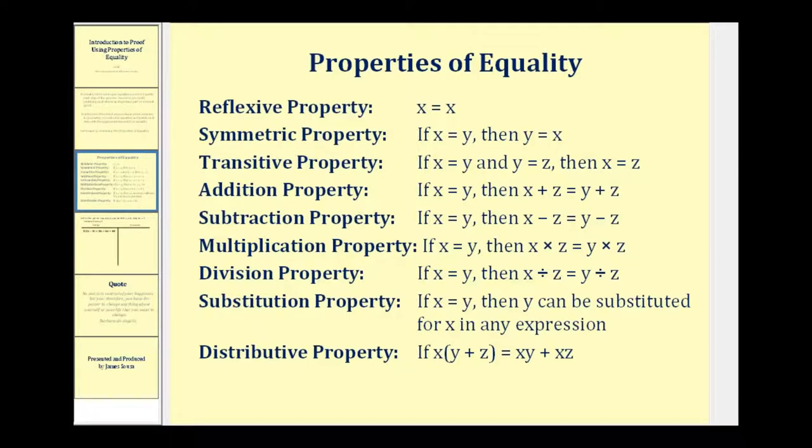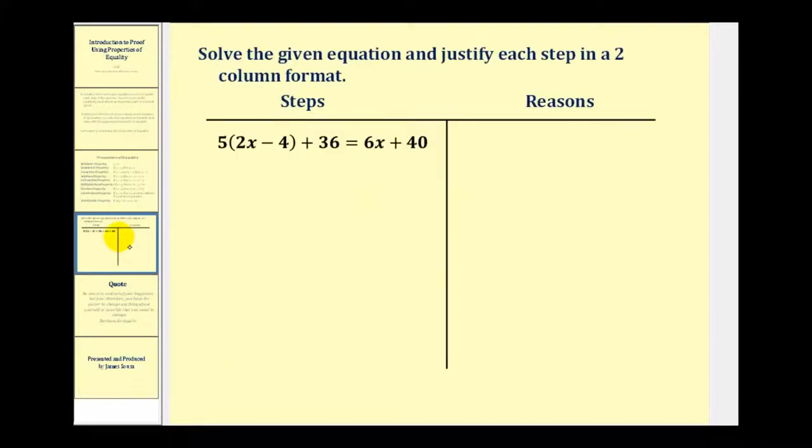Let's take a look at our two-column proof. Here we want to solve the given equation and justify each step in a two-column format. So in a two-column proof, we normally have our steps or procedures on the left, and then our reasons or justifications on the right.